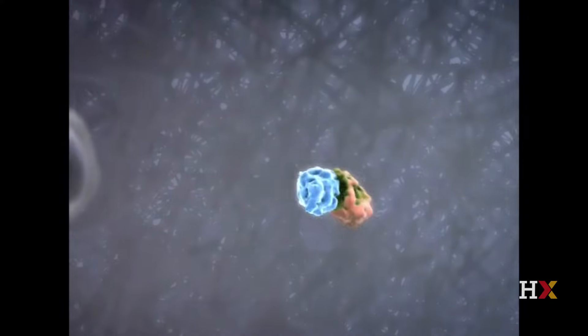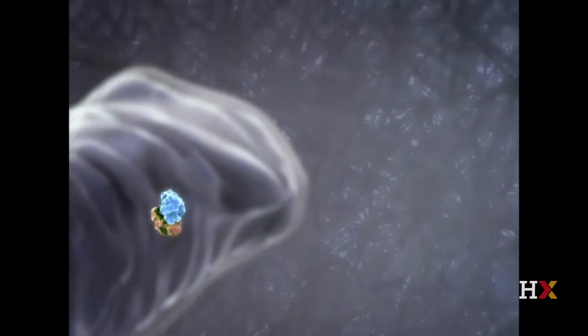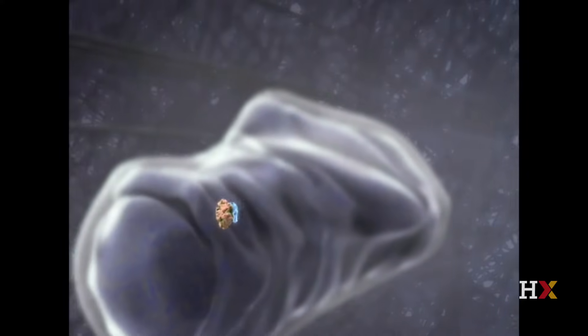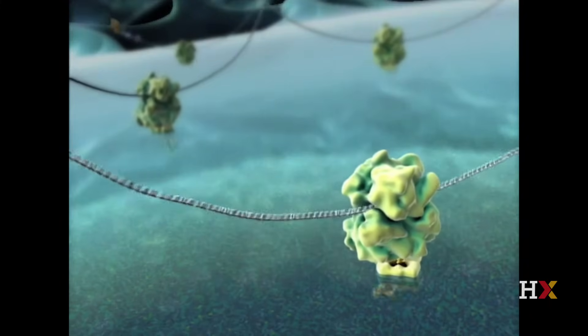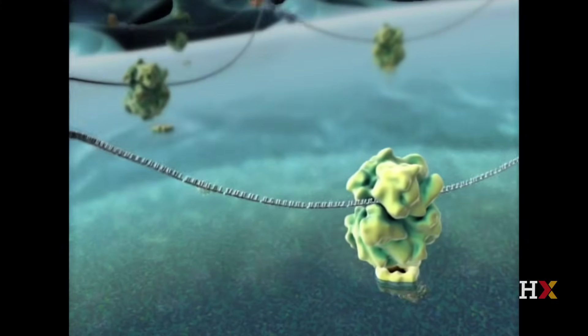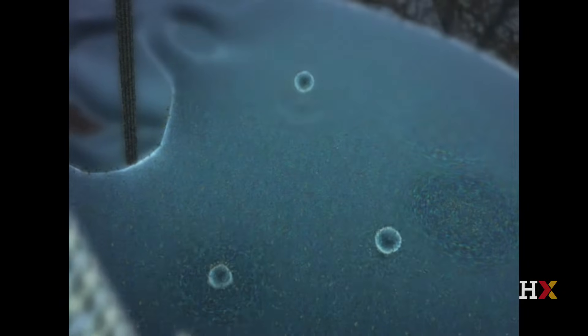Others bind to other proteins that help target them to organelles such as this mitochondrion that you're seeing right now. Still other proteins are translated directly into other organelles like the endoplasmic reticulum.